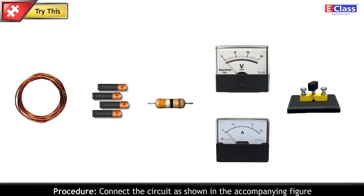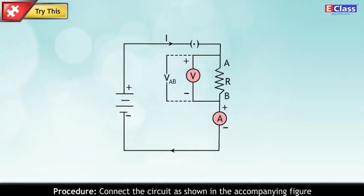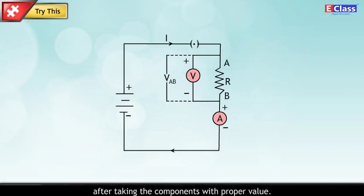Procedure: Connect the circuit as shown in the accompanying figure after taking the components with proper value. Measure the current I. Also measure the potential difference VAB between the two ends A and B of the resistance.